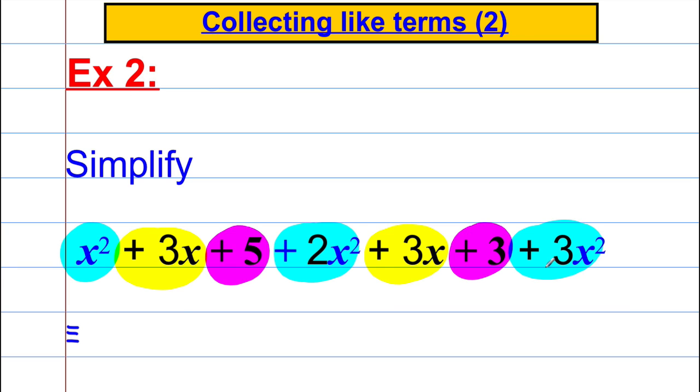And when you've done it like that, it's absolutely clear what the answer is going to be. So we've got an x squared, 2x squared is 3x squared, and another 3x squared would give us 6x squared, plus 3x add 3x is 6x, and 5 add 3 is 8. So you can see how quickly you can do it once you've done your highlighting.